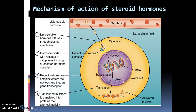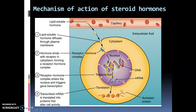The hormone-receptor complex enters the nucleus through the nuclear pore in the nuclear membrane. Inside the nucleus, the hormone-receptor complex binds with the DNA. This is why they are called transcription factors. Transcription is the synthesis of mRNA from the DNA template — the hormone-receptor complex binding with DNA triggers this process.